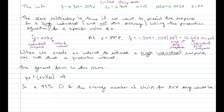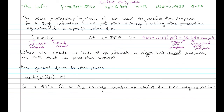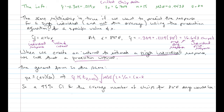A confidence interval is used for the mean response; a prediction interval is used to estimate a single individual's response. The general form is the same: PE plus or minus CV times SE. Our point estimate is still y-hat, our critical value is still t with nu degrees of freedom and 1 minus alpha over 2 in the left tail, and the standard error is the square root of MSE times (1 plus 1/n plus (X minus X-bar) squared over (n minus 1) times s_X squared).